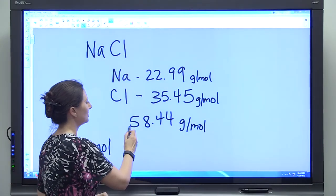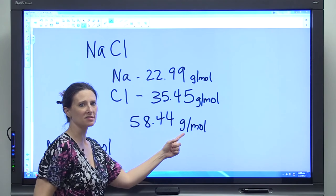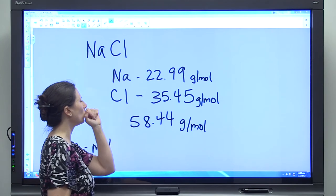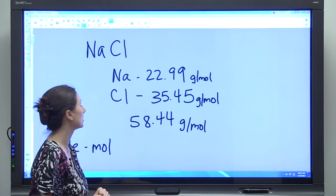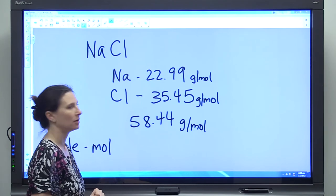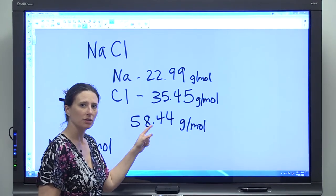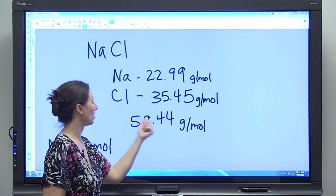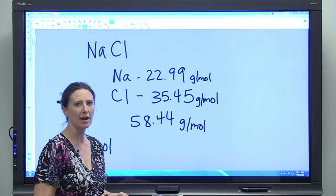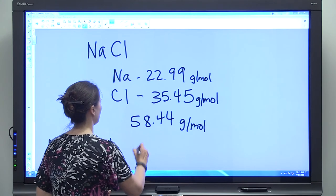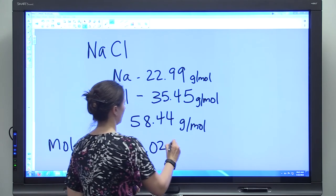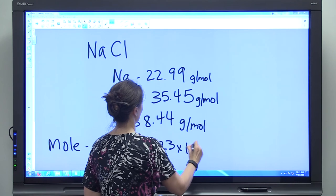So we know that in 58.44 grams of salt, we have one mole of sodium chloride molecules. So if we counted the number of sodium chloride molecules in 58.44 grams, we would come up with 6.023 times 10 to the 23rd.